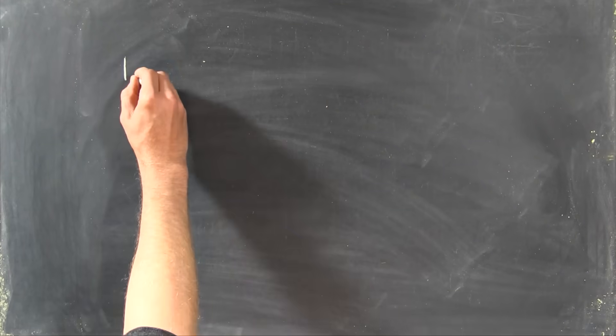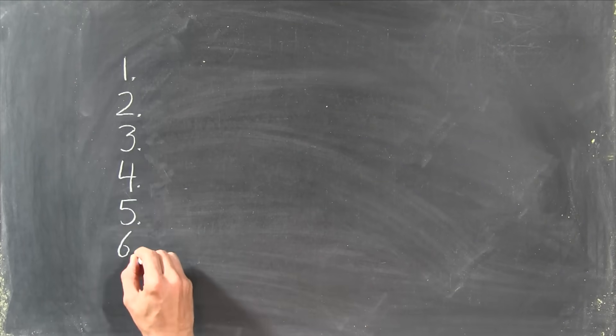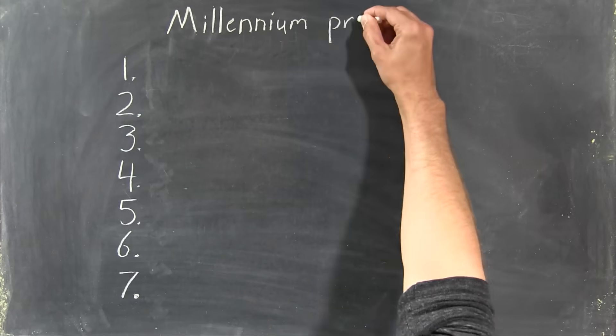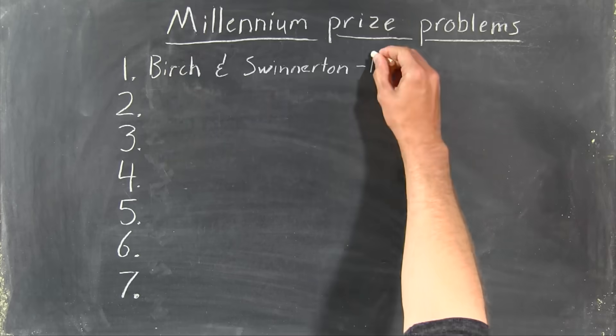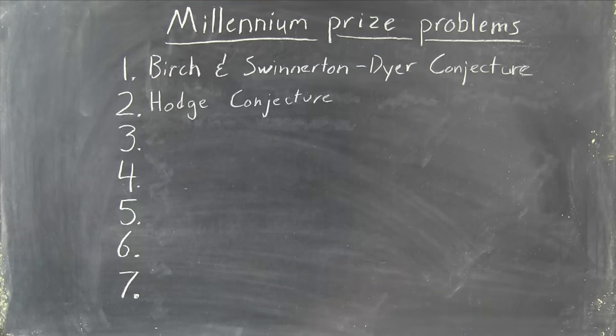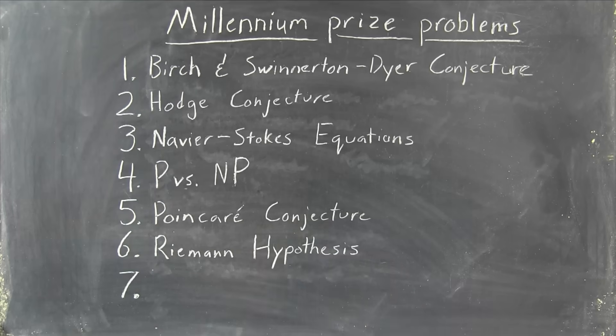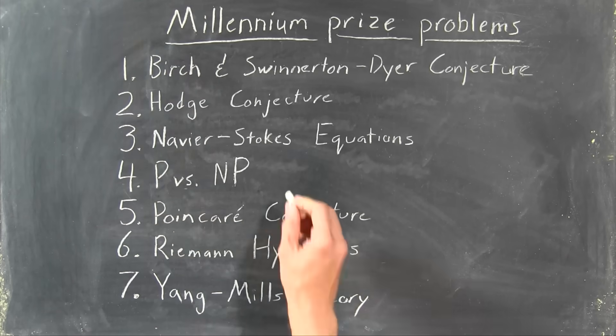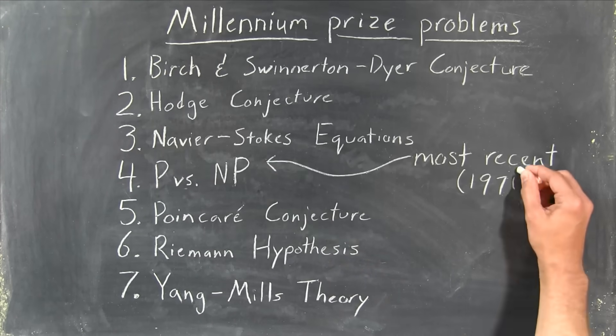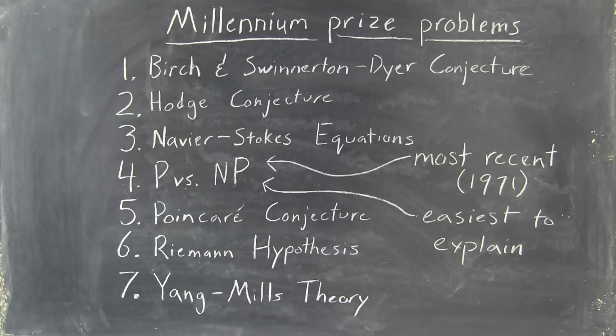In 2000, the Clay Institute offered one million dollars each for the solutions to seven key problems in math, the Millennium Prize problems. These are profound and difficult problems, and for most of them it takes a lot of specialized knowledge to even understand the question. Of the seven problems, P versus NP was both the most recently conceived in 1971, and by far the easiest one to understand and explain.